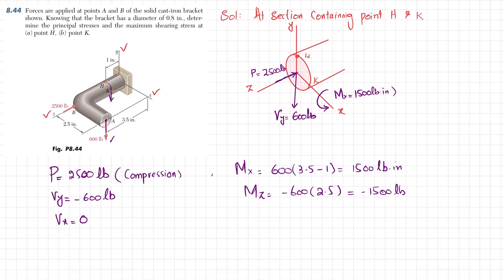So Mz equals minus 1500 pound-inch. Moment about the y-axis is zero because both forces pass through or act at this point — there is no moment about the y-axis. This completes the force-couple diagram for the section containing H and K. We now proceed to find principal stresses.